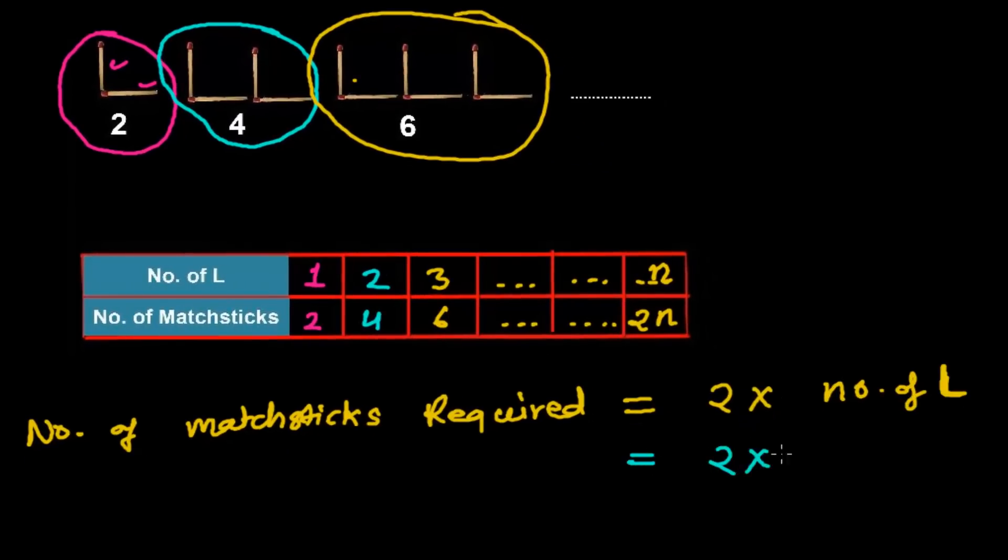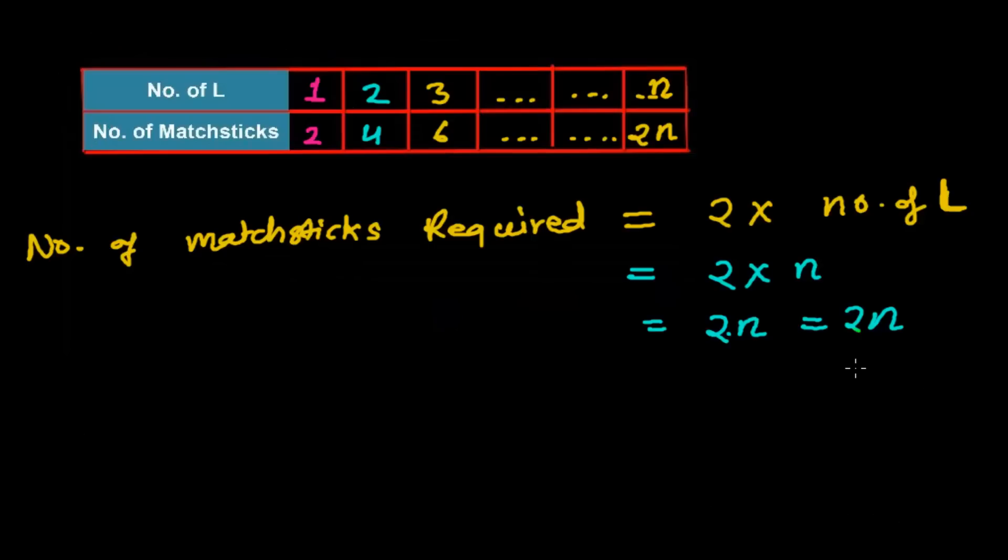Number of matchsticks required equals 2 times the number of L's. For a while, let's say I'm giving this a value of N. N here represents the number of L's required, which is not fixed, not constant. You may need 100, you may need 2, you may need 10 or 15. Number of matchsticks required can be written as 2N. Some people also write 2 dot N. Anything is possible - 2 times N, 2N - they all represent 2 multiplication N.